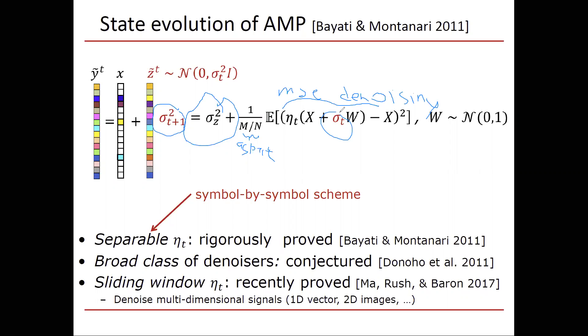So Bayati and Montanari proved rigorously that a symbol-by-symbol scheme for the denoiser adheres to this state evolution. Again, state evolution means that we can predict the evolution of the error between iterations. Moreover, in another paper by Donoho et al in 2011, they conjectured state evolution for a broad class of denoisers, and a later result by my former student Yan Ting Ma and other co-authors in 2017 showed a sliding window denoiser that obeys state evolution.